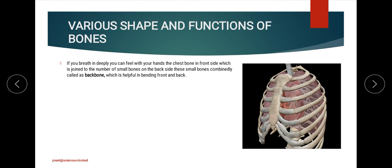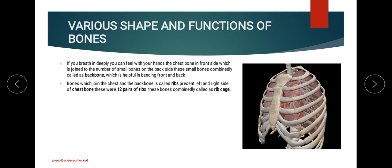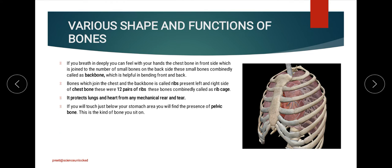For example, the ribcage performs the major function of helping in the process of breathing. On the other hand, it provides security and protection to the lungs and heart, helping prevent mechanical wear and tearing of those organs. This structure also has a connection with the shoulder girdle, or pectoral girdle, which collectively helps in the whole process.